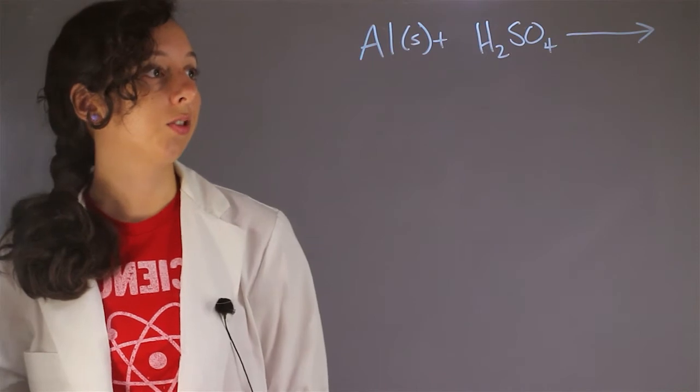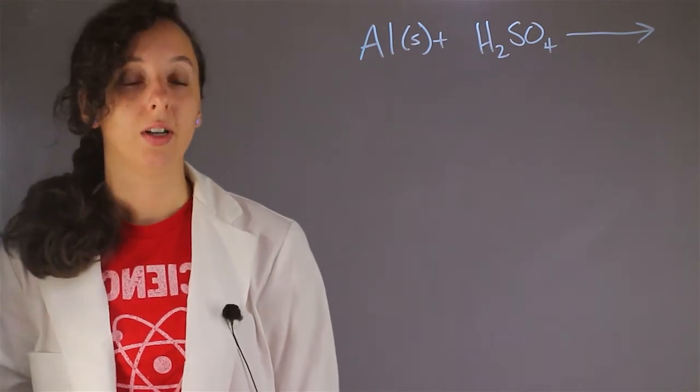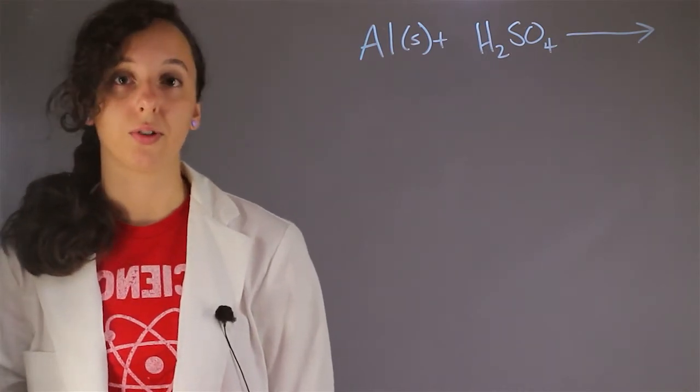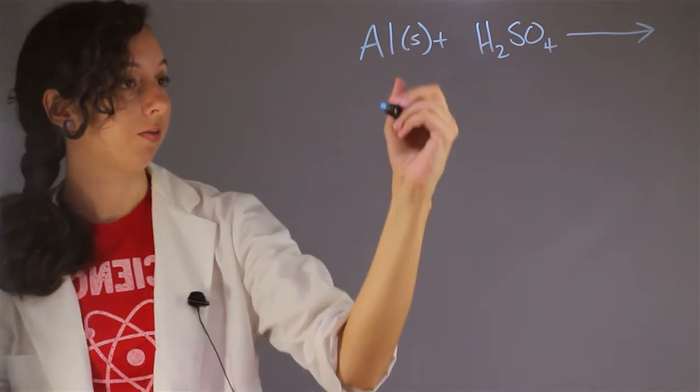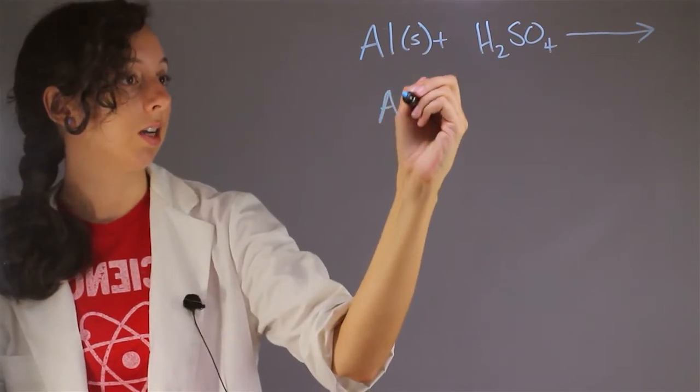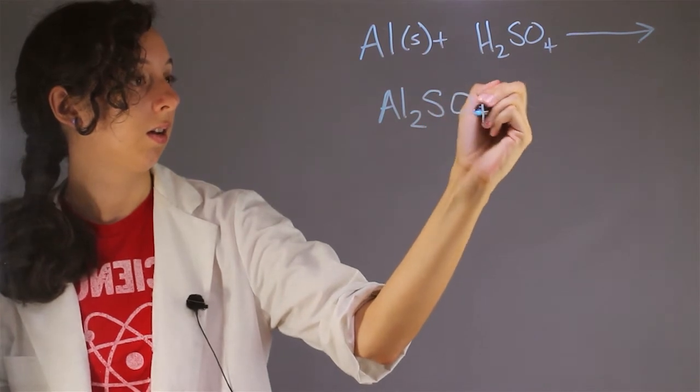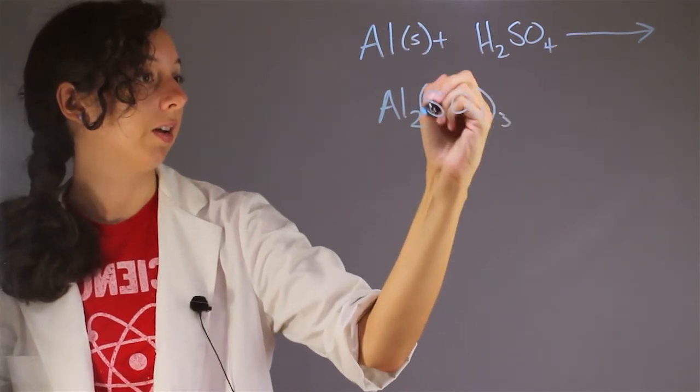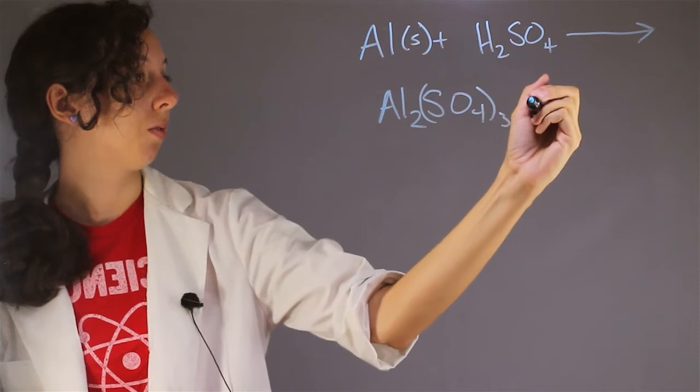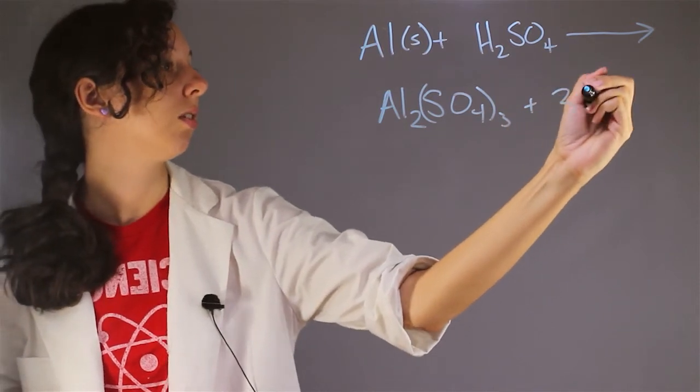And when sulfuric acid reacts with the metal, they tend to form metal sulfates, and so what we're going to form here is actually aluminum sulfate, and that's the chemical formula of that, and you also form hydrogen gas during this process.